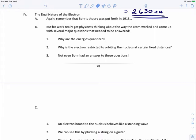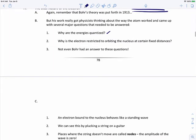For instance, why are the energies quantized? Why are the energies of the electrons, the photons, quantized? Why is the electron restricted to orbiting the nucleus at certain fixed distances?